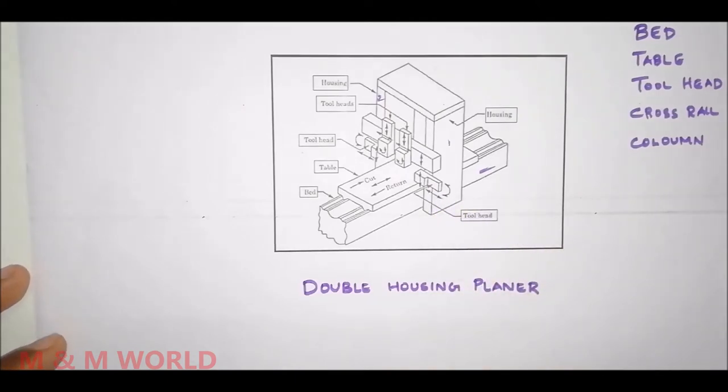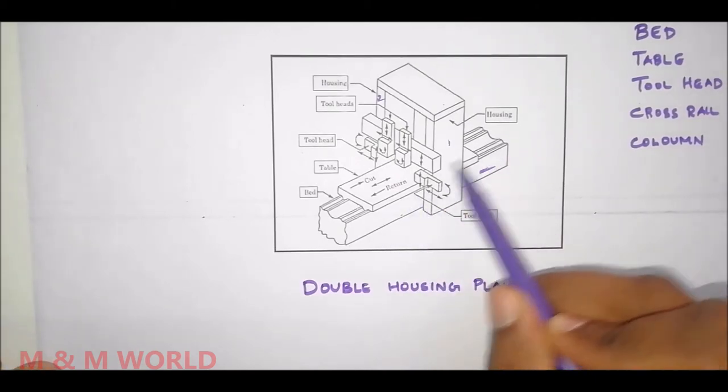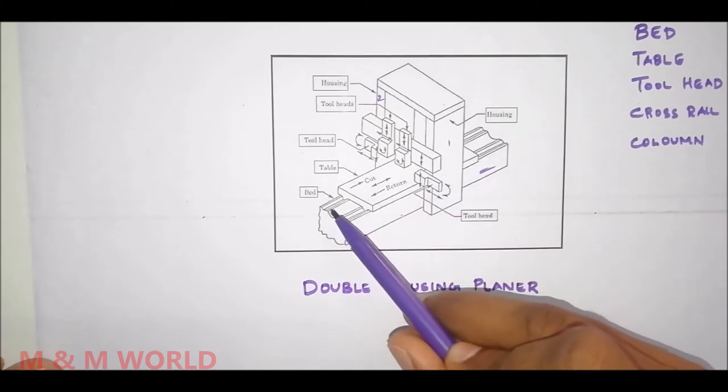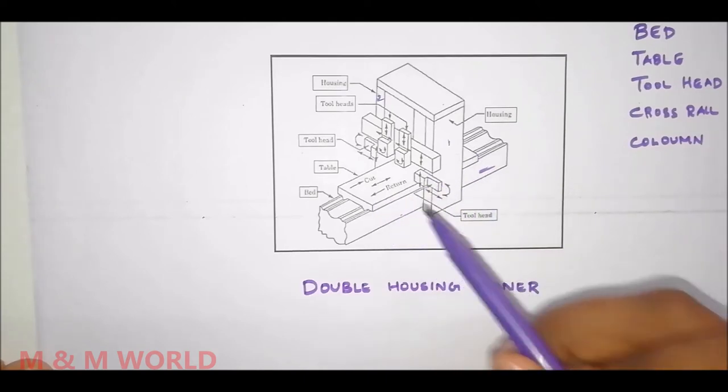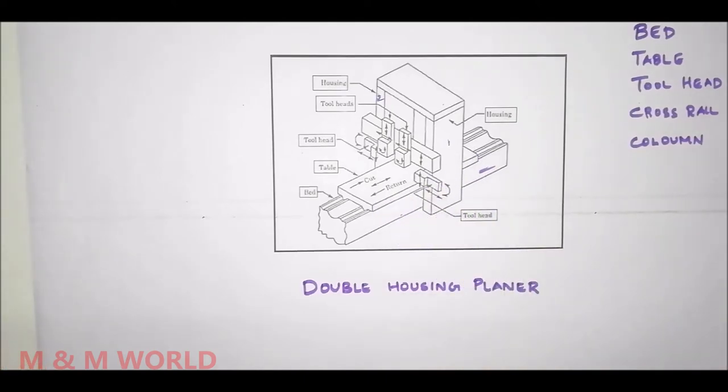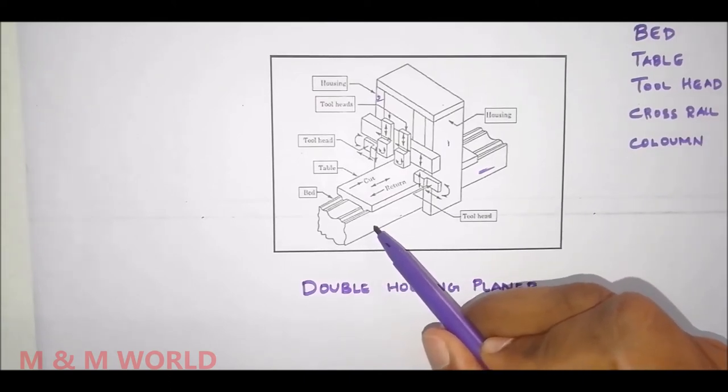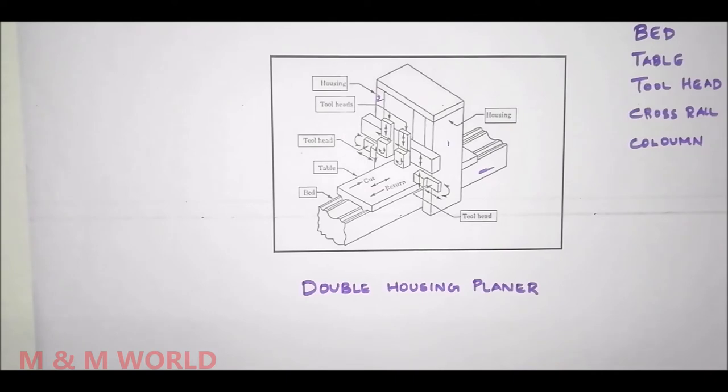In case of a planer, the table will be reciprocating through the guideways on the bed. The bed of a planer is a box-like casting, very large in size and heavy, and it supports the column and all other moving parts of the machine.